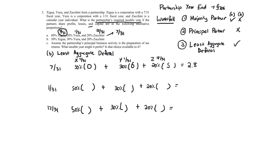Now testing January 31st: X has a July 31st year end, so we count from January 31st to July 31st — February, March, April, May, June, July: six months. Y has a January 31st year end, so zero months of deferral. Z has a December 31st year end, so from January 31st to December 31st is eleven months. Weighted average: X = 0.50 × 6 = 3.0, Y = 0, Z = 0.20 × 11 = 2.2, total = 5.2 months. Testing December 31st: X is seven months (January through July), Y is one month (December 31st to January 31st), Z is zero. That gives 0.50 × 7 = 3.5, 0.30 × 1 = 0.3, Z = 0, total = 3.8 months.